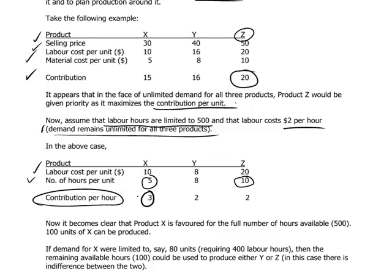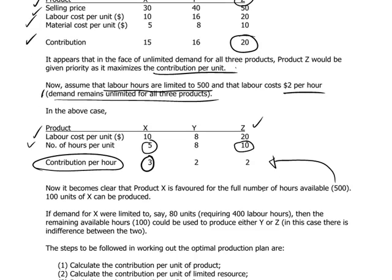Product X actually does better. If we devote the 500 hours to producing product X, we generate a contribution of $3 per hour, or $1,500. Whereas if we devoted the full 500 hours to product Z, we would generate only $2 contribution per hour, or a maximum of $1,000. Given this constraint, X should be favored over Z. By recalculating contribution not on a per-unit basis but on the basis of the scarce factor — in this case labor hours — we come up with a different conclusion.